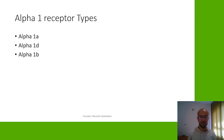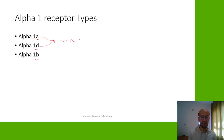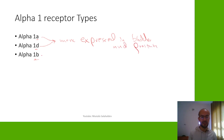Before we go into drugs, I want to add one more idea: the alpha-1 receptors have different types. We have alpha-1a, alpha-1d, and alpha-1b. The alpha-1a and alpha-1d are more expressed in the bladder and prostate.